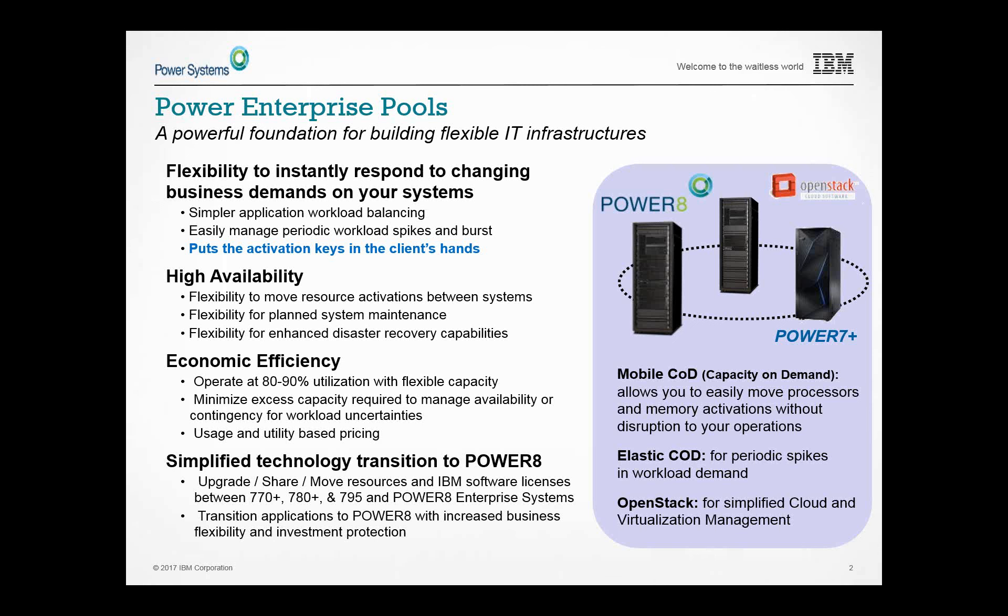This is the ability to put the activation key management on an HMC — a master HMC or primary key holder. This gives flexibility to have operators move activations around, or better yet, write scripts and use automation with tools like Power HA or live partition mobility to actually move the workload and processor activations from system one to system two seamlessly. This is a big deal for high availability and keeping workloads up and running.